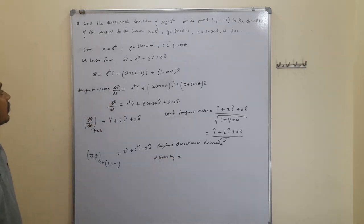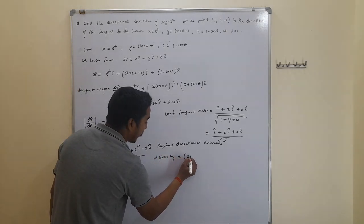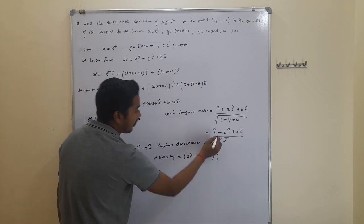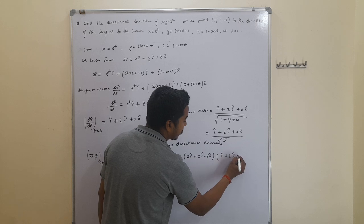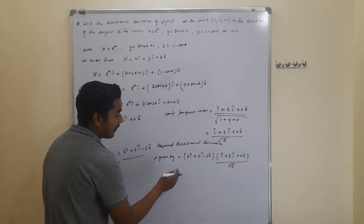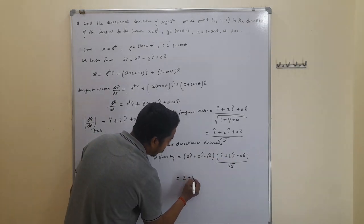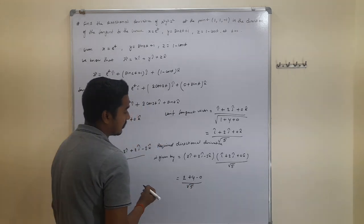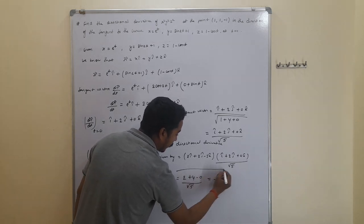The required directional derivative is the dot product of ∇φ at (1,1,-1) with the unit tangent vector: (2î + 2ĵ - 2k̂) · (î + 2ĵ + 0k̂) / √5 = (2×1 + 2×2 + (-2)×0) / √5 = (2 + 4 + 0) / √5 = 6/√5. This is the required solution.